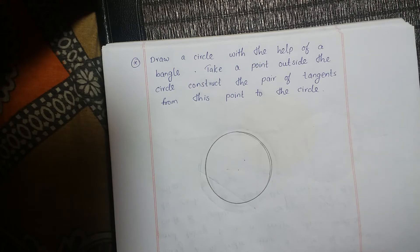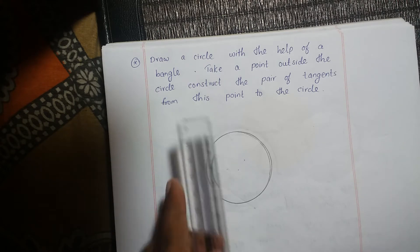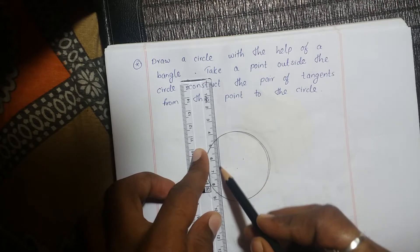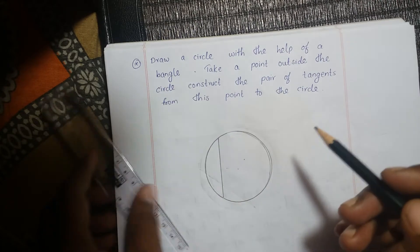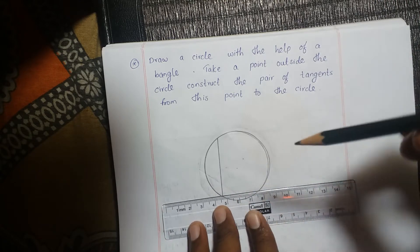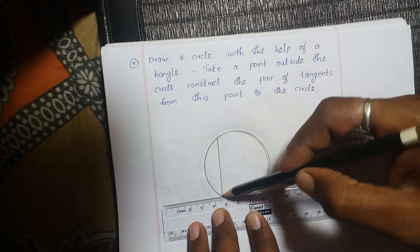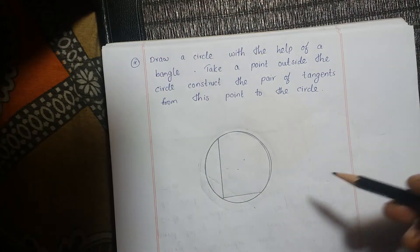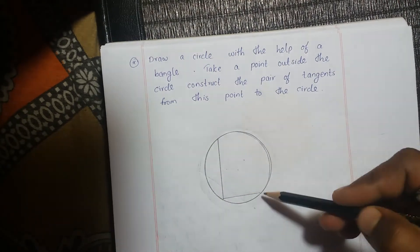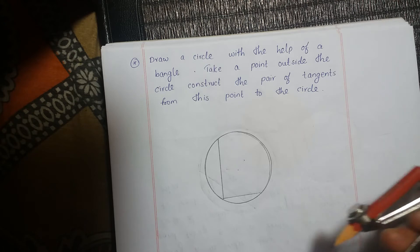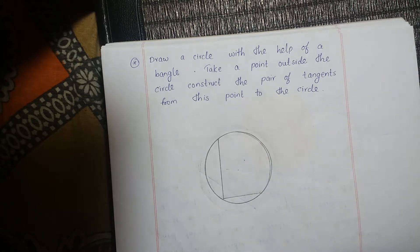To find the center, draw two chords which are perpendicular to each other. This is chord 1, this is chord 2, which are perpendicular to each other. Now draw the perpendicular bisector for both the chords.